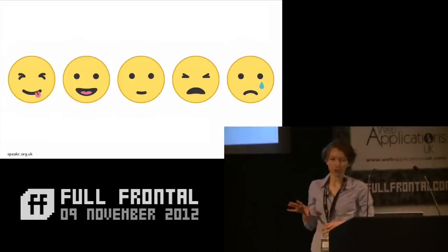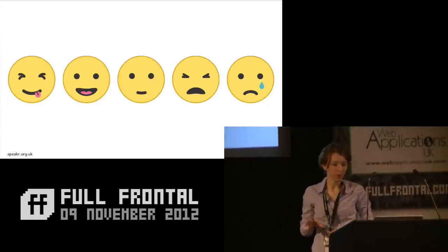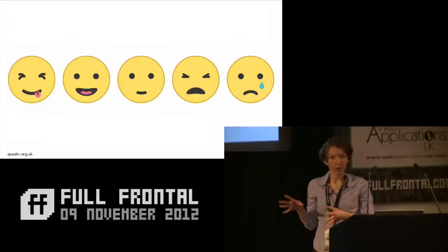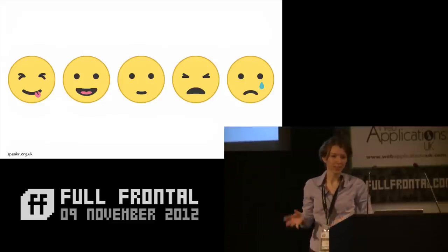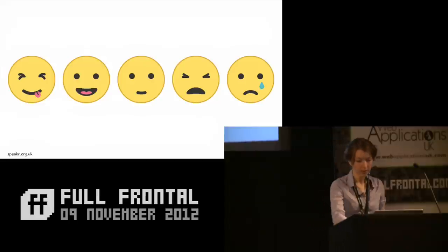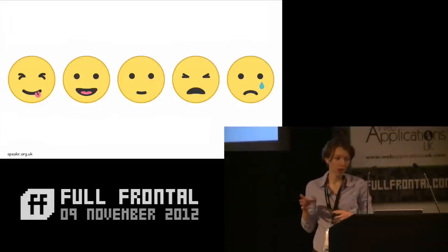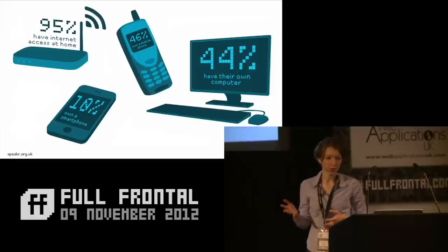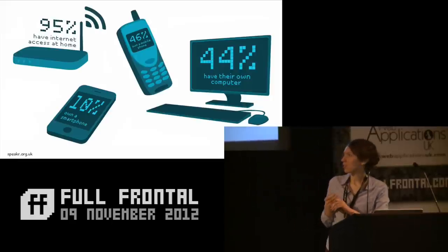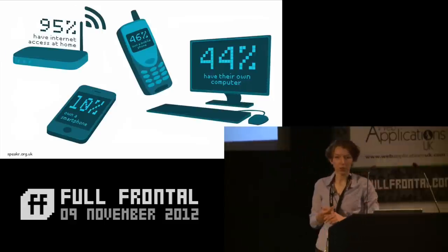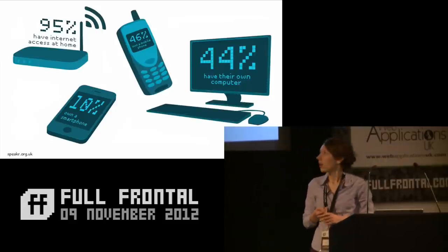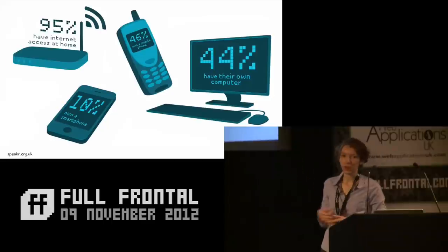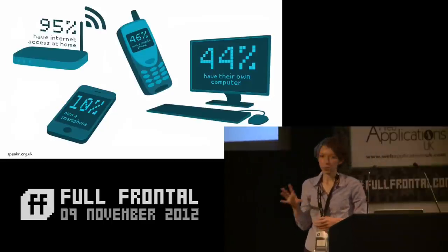We visited loads of primary schools to test a prototype web app. We asked whether they had internet at home and what kind of devices they had. We wanted kids to be able to use the site in privacy, because we didn't want other people looking over their shoulder and influencing what expression they chose. Sharing a machine makes that impossible. We found that only 44% had their own computer they didn't share. Of those who had mobile phones — 46% — only 10% were smartphones.